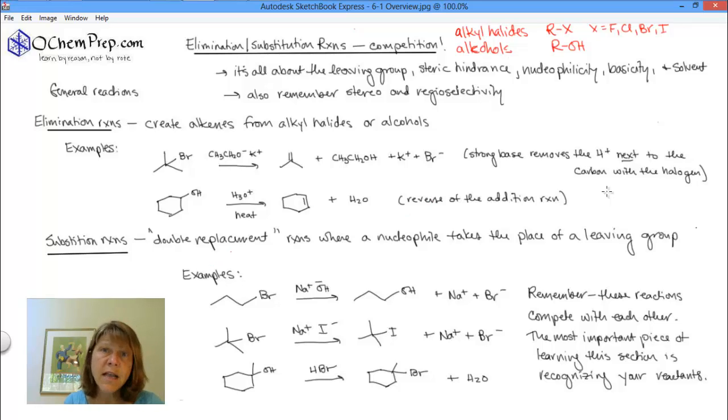Now, substitution reactions, I'd like to think of as double replacement reactions because you're used to that from GenChem or IntroChem. And so, if we look at a substitution reaction, a nucleophile takes the place of the leaving group. So, here is propylbromide. NaOH is the nucleophile. OH minus specifically will be taking the place of the Br. Na plus is the spectator, and the leaving group leaves, and there is Br minus.